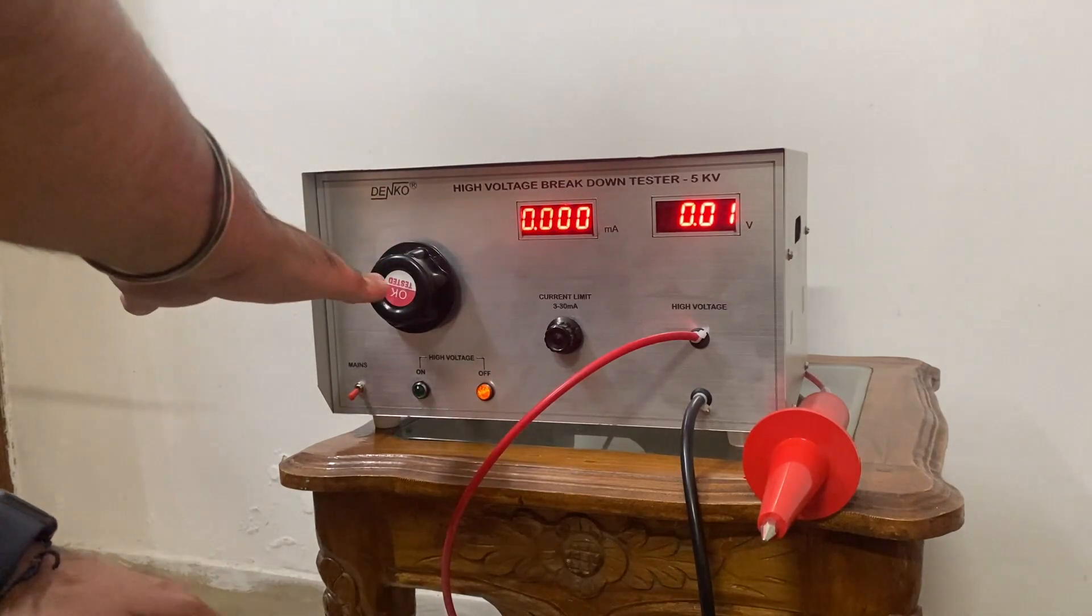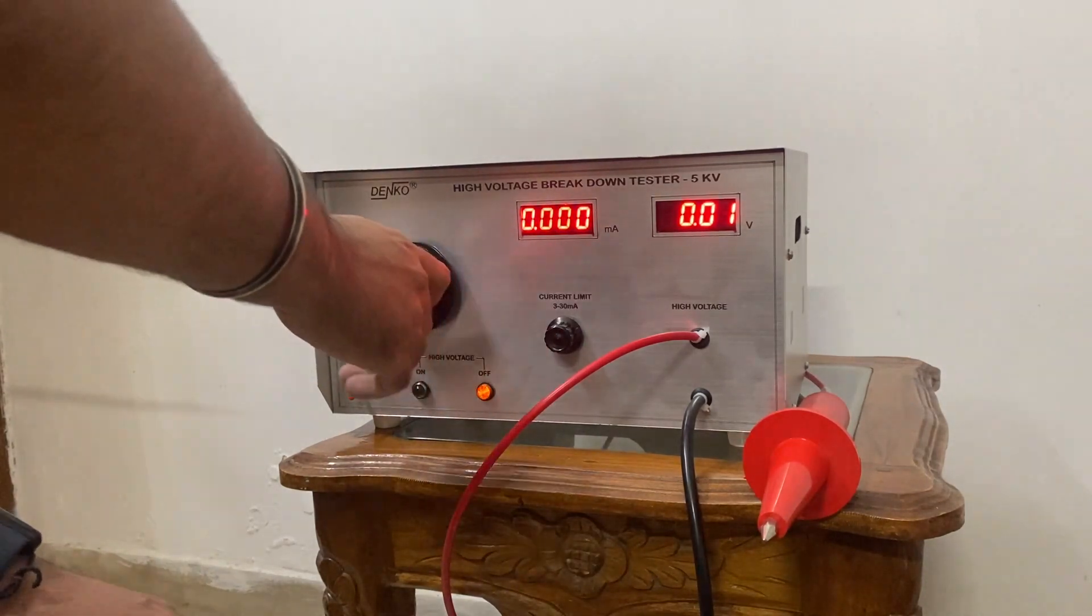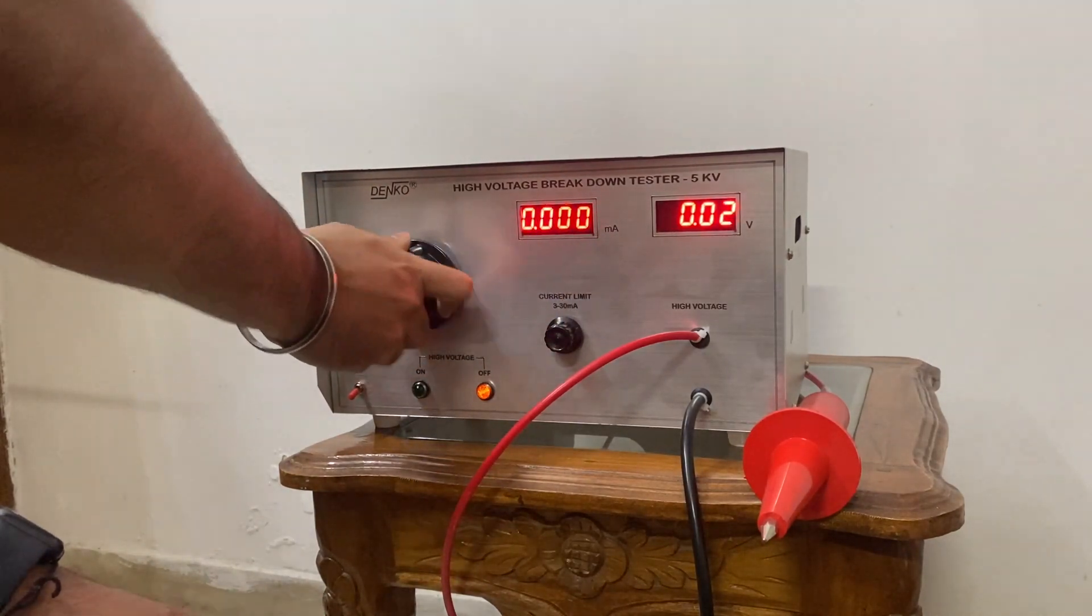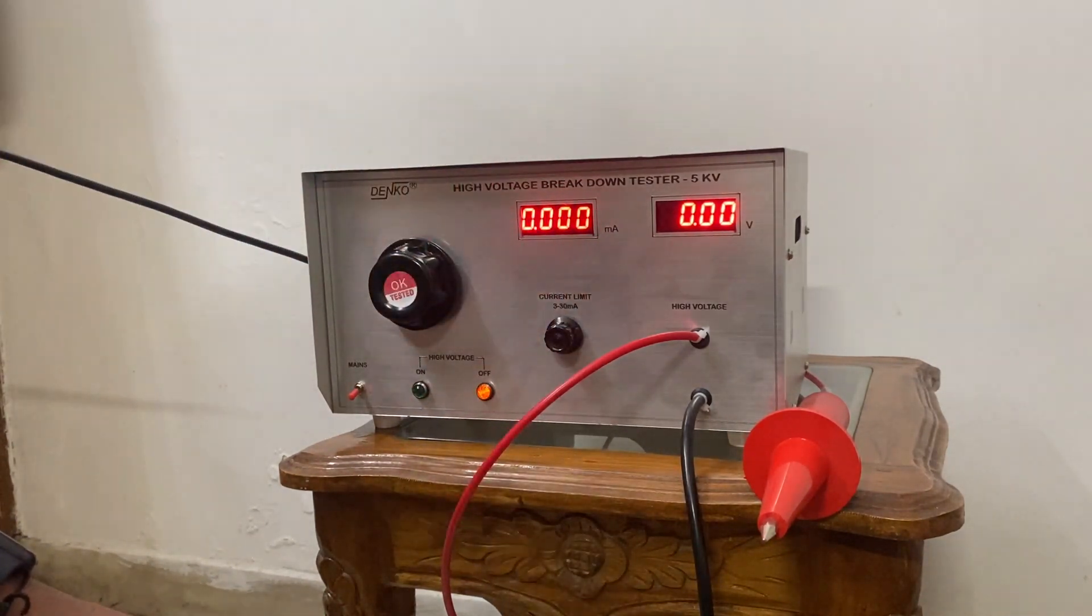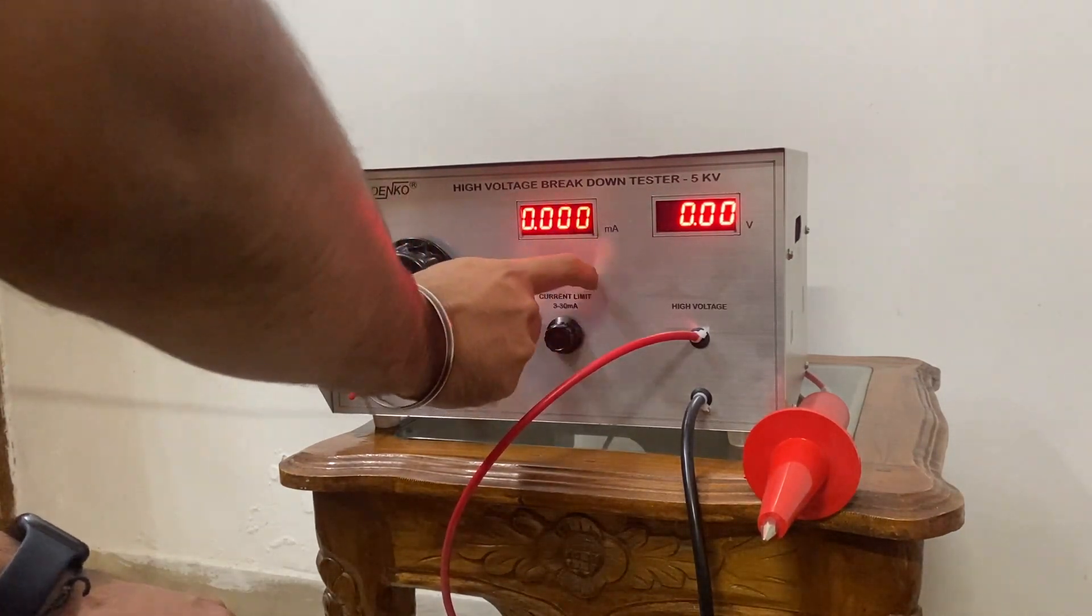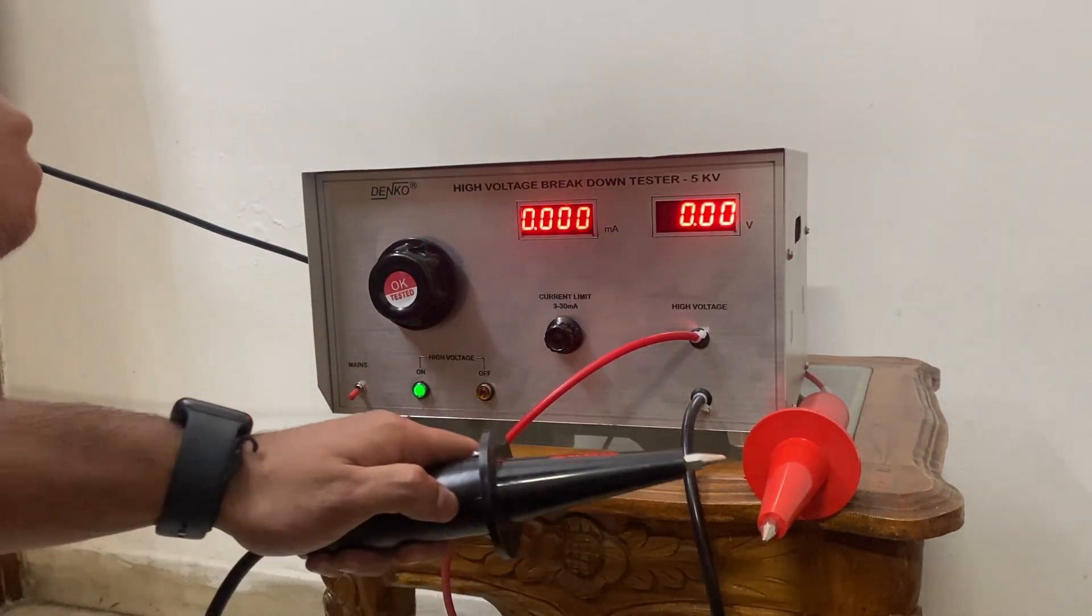Now you can select any desired voltage from 0 to 5000 volts using this dial. Also it has a milliamp potentiometer through which you can select the milliamps of this product. Right now it's at maximum, so it's at 30 milliamps. I am going to show it to you as well.